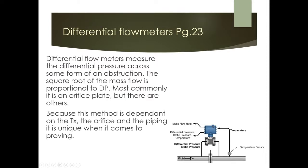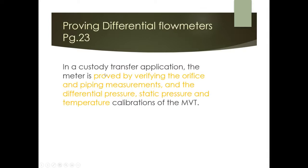Differential flow meters are widely used and measure the differential pressure across an obstruction — usually an orifice plate. The square root of the mass flow is proportional to the differential pressure measured by the transmitter. Because this method depends on the transmitter, the orifice, and the piping, proving is more complex. Orifice plates can wear out, and the transmitter, piping, and orifice itself all come into play.